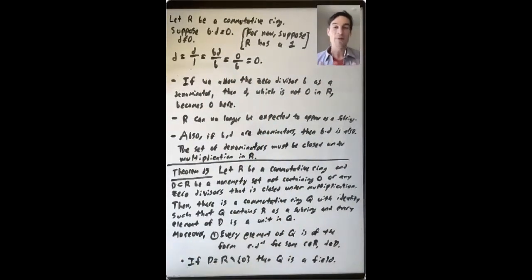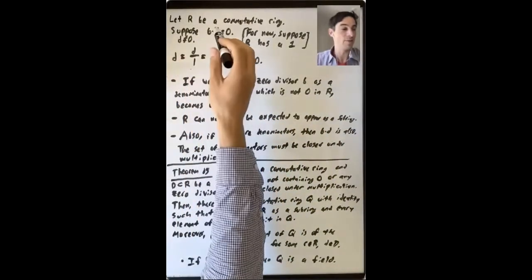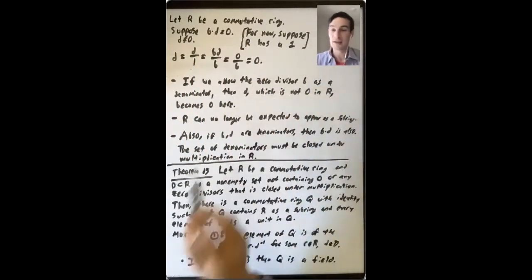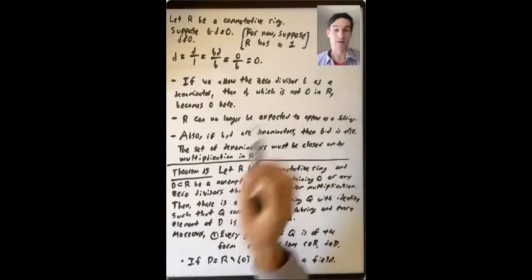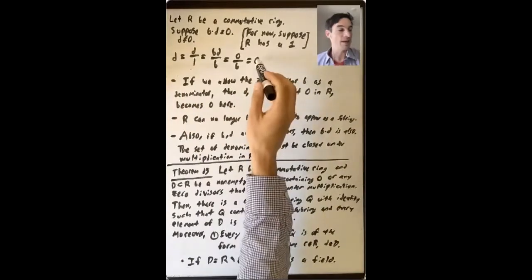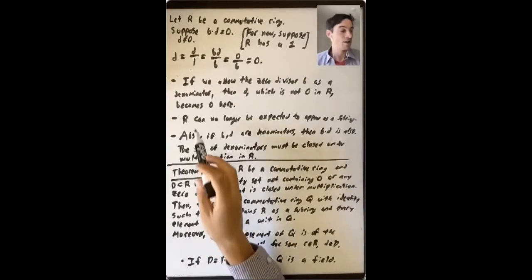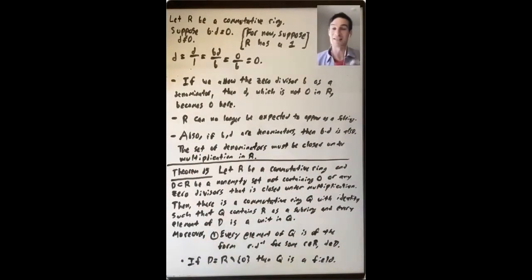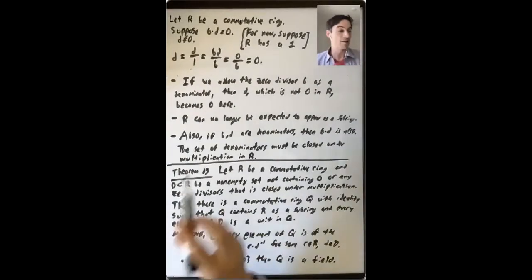This is a little informal for now, but the whole idea is to motivate the theorem we're going to state and prove about building this larger ring of fractions out of a ring R. If we allow a zero divisor b as a denominator, then d — which is not zero in R — becomes zero in this ring made up of equivalence classes of ordered pairs. So if we want R to appear as a subring in this ring of fractions, we can't allow zero divisors in the denominator.